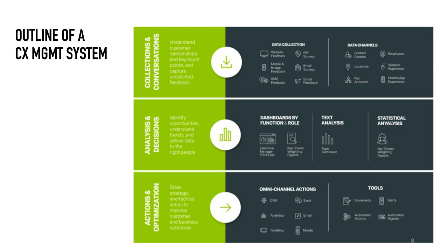And finally, a CX Management System enables the organization to take action — both strategic and tactical — to improve customer and business outcomes. There's a variety of channels in which organizations can take action, from case management solutions to different communication channels like Slack, enabling leaders to work with the way an organization already operates. The intention of a CX Management System is not just to collect feedback, but also to easily analyze, identify insights, and ultimately take action.